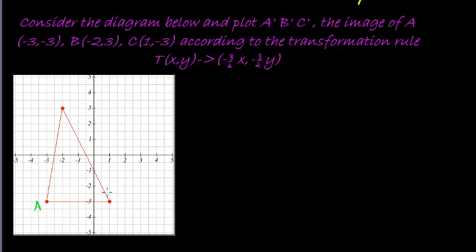B is negative 2, 3, that's B. And then this one must be C, 1, negative 3.